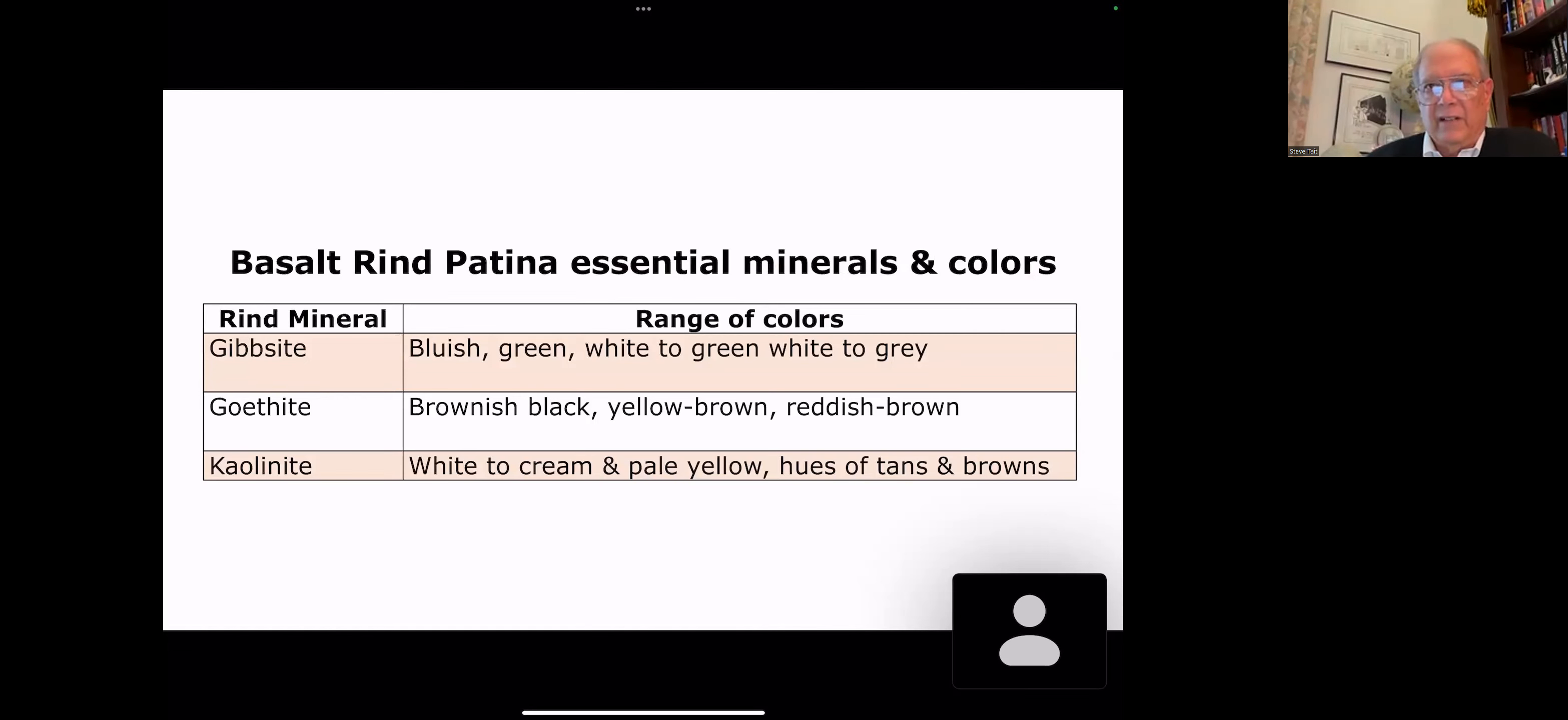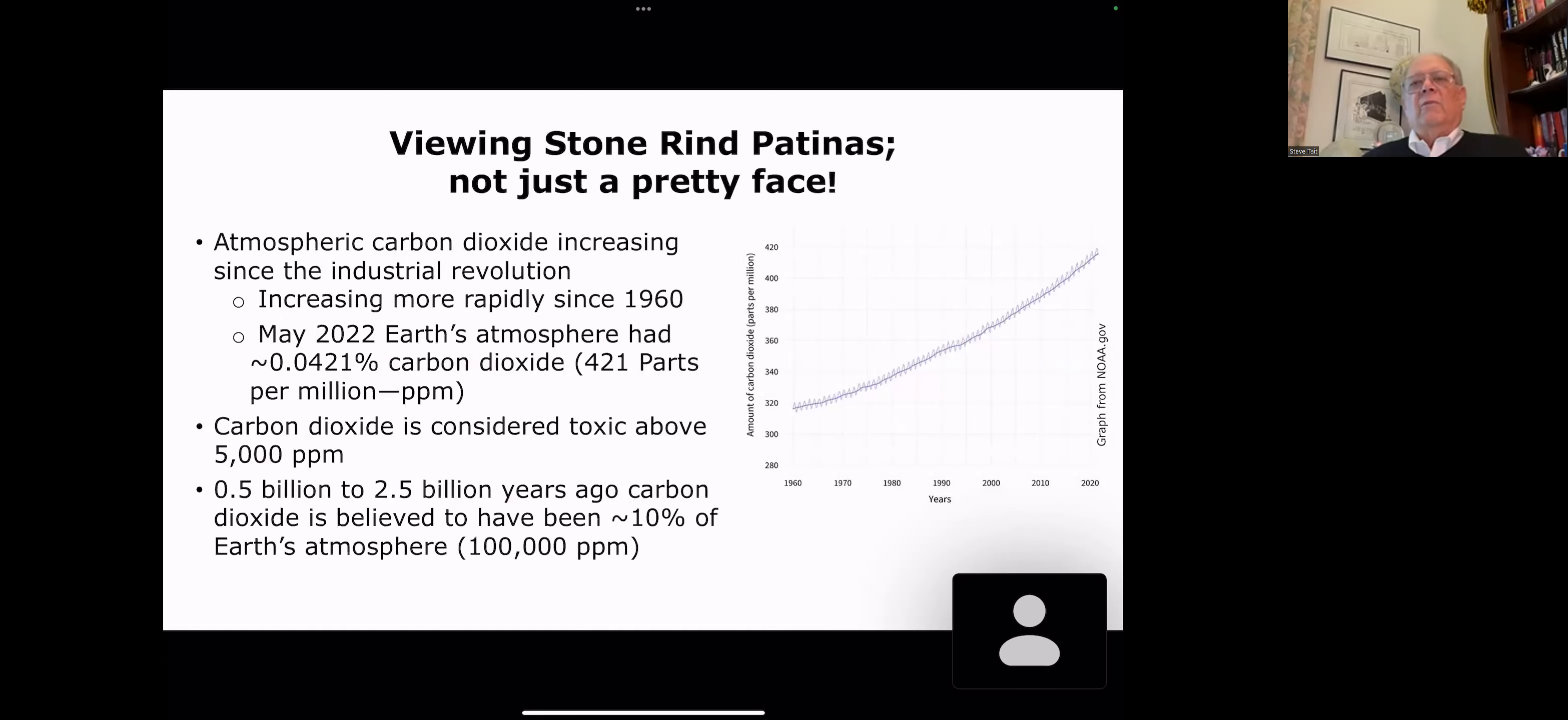This is just a summary of the colors. The gibbsite and goethite you've seen several times. Kaolinite now has white to cream, pale yellow hues of tans and browns.